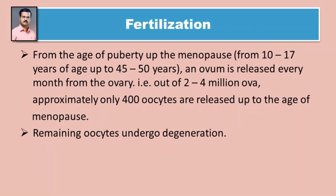From the age of puberty up to menopause - from 10 to 17 years of age up to 45 to 50 years - an oocyte is released every month from the ovary, out of 2 to 4 million oocytes. Approximately only 4000 oocytes are released up to the age of menopause; remaining oocytes undergo degeneration. Rajo nivruttiparyant 2-4 dashalaksha andapeshi pahiki, saadharanpane fakt 4 hazar andapeshi andashayatun baahir padat. Urlalya sarv andapeshinncha ra-hatikani nasha hoto.